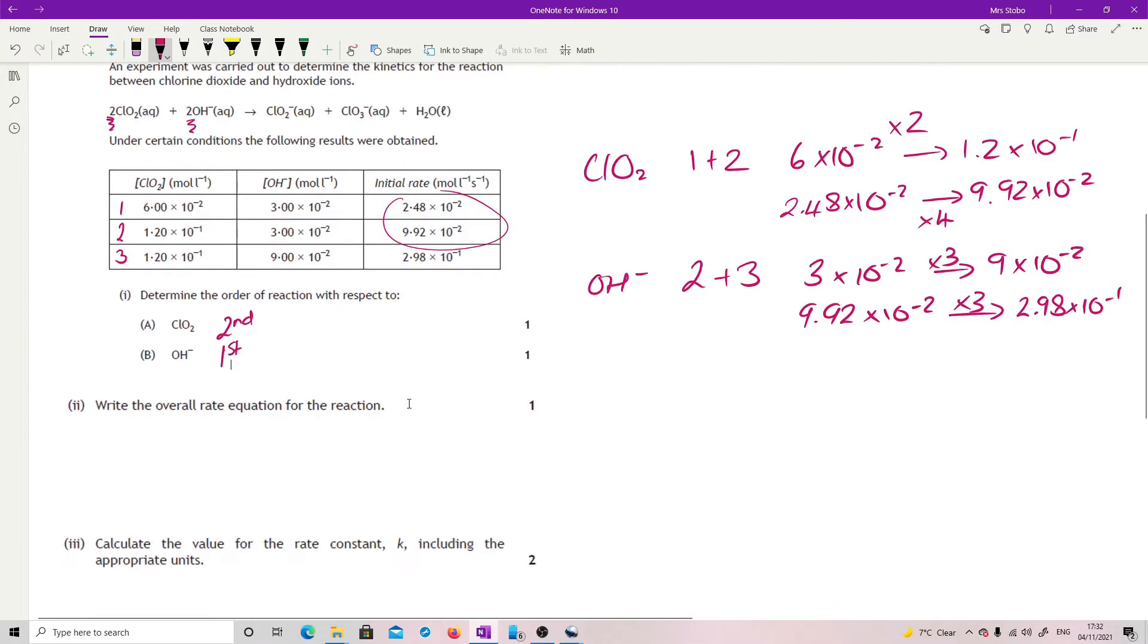Right. The overall rate equation. That's okay. So rate equals, just being really careful that we have a small k. I always do the loopy one just to be clear that I'm not doing that with my big k's. So get rid of that. And we've got [ClO2] squared and my [OH-] concentration just as is.